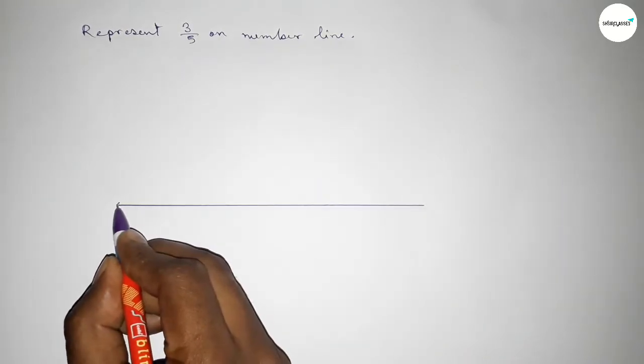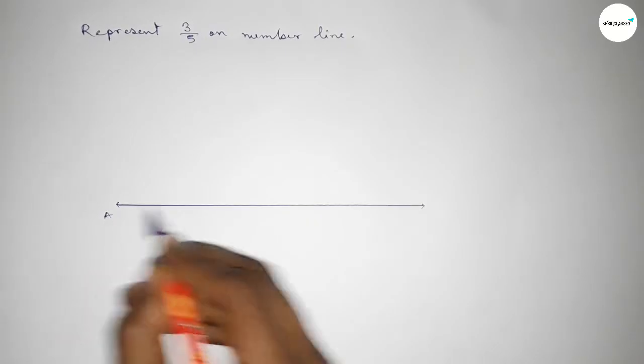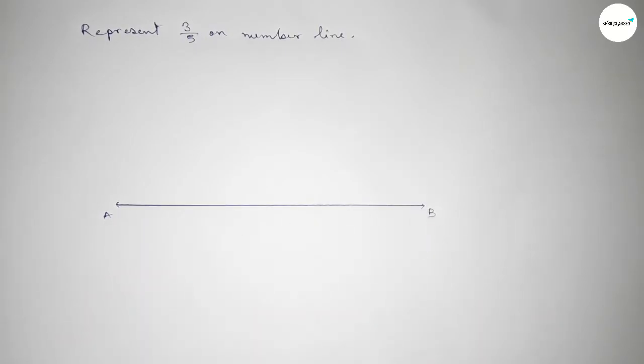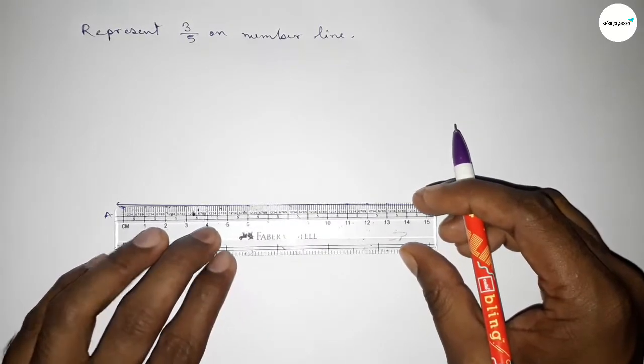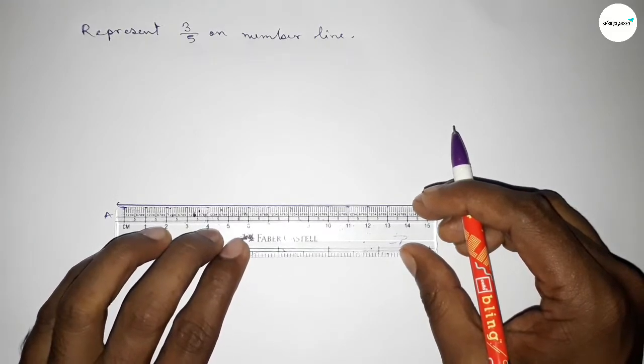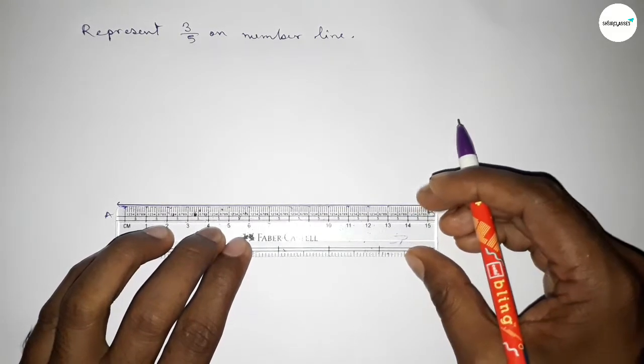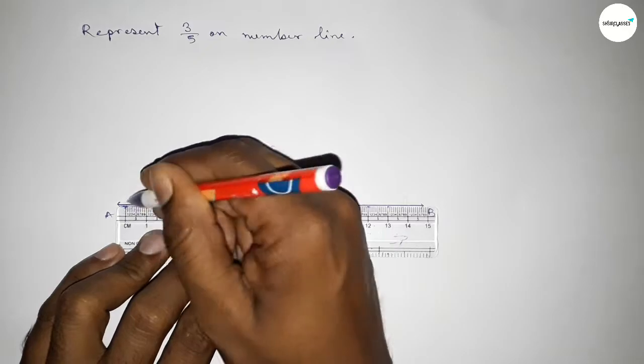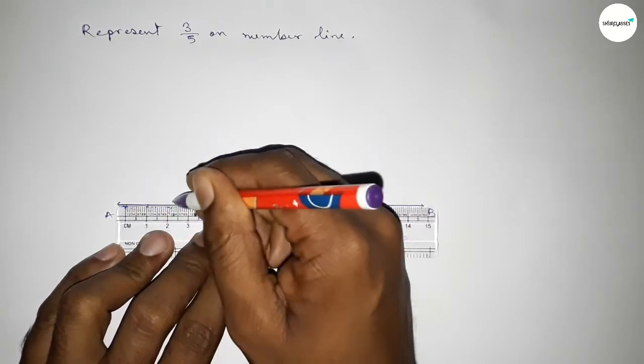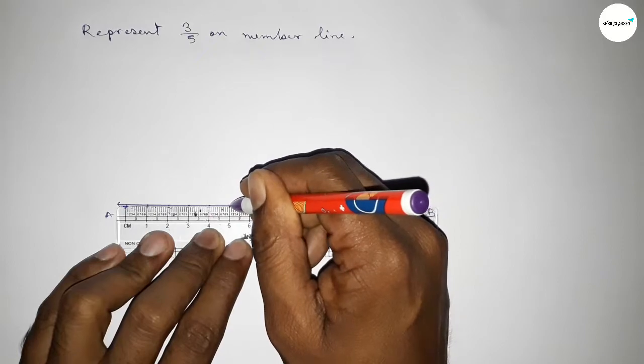Drawing a line and taking arrow mark on both side, and this is AB line. Next we have to mark the numbers on the line by using scale.